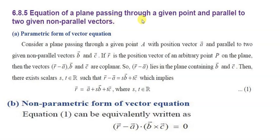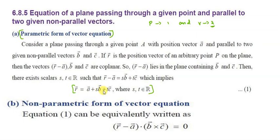Next: equation of a plane passing through a given point and parallel to two given non-parallel vectors. We have one point and two vectors. The non-parametric form of the vector equation is: (r-vector minus a-vector) dot (b-vector cross c-vector) equals zero.